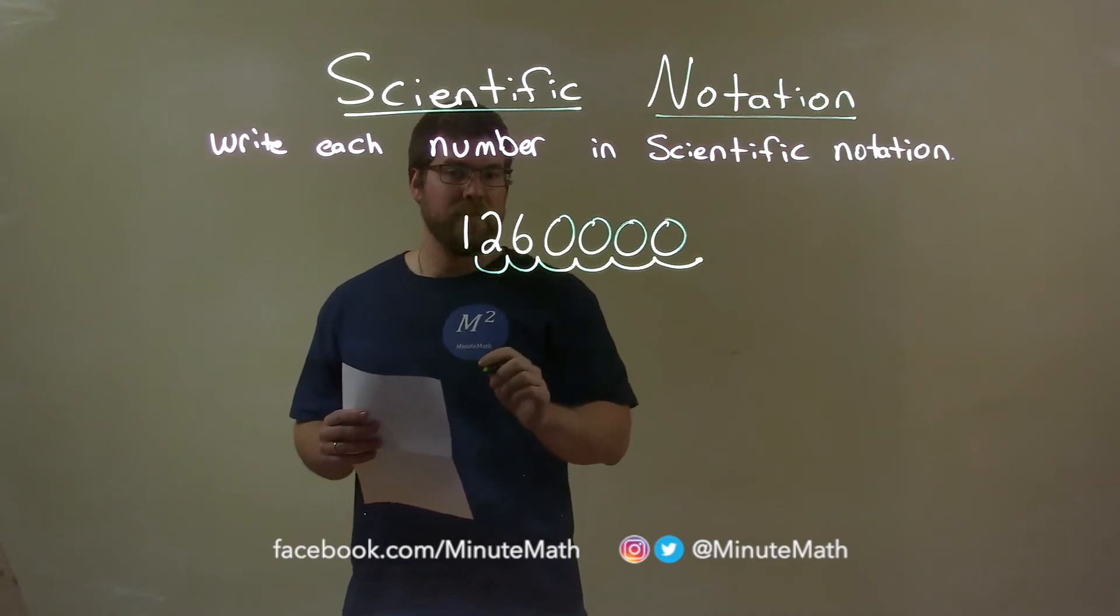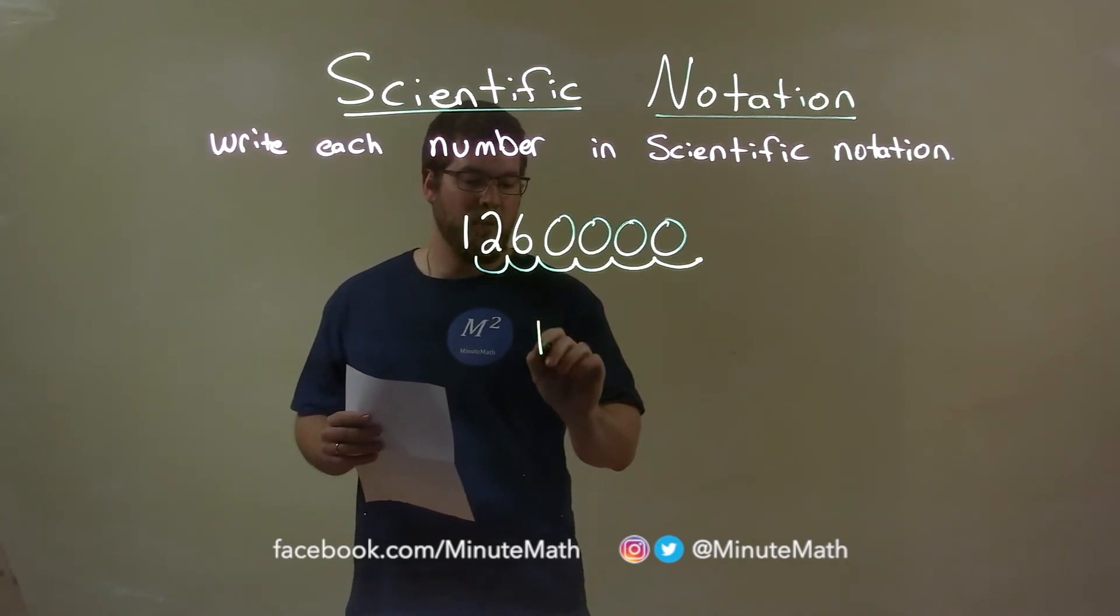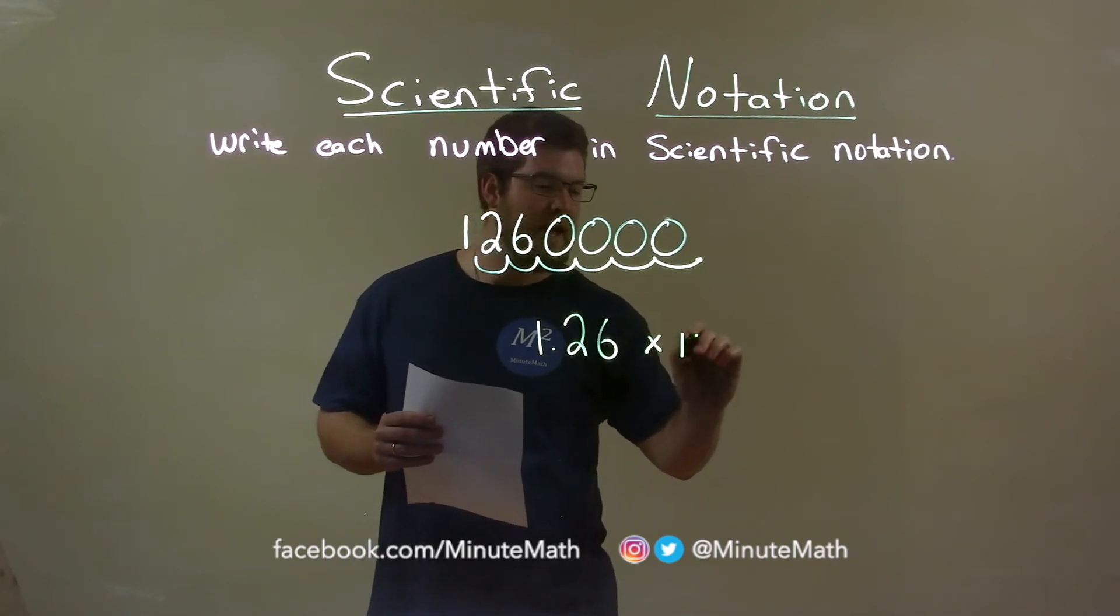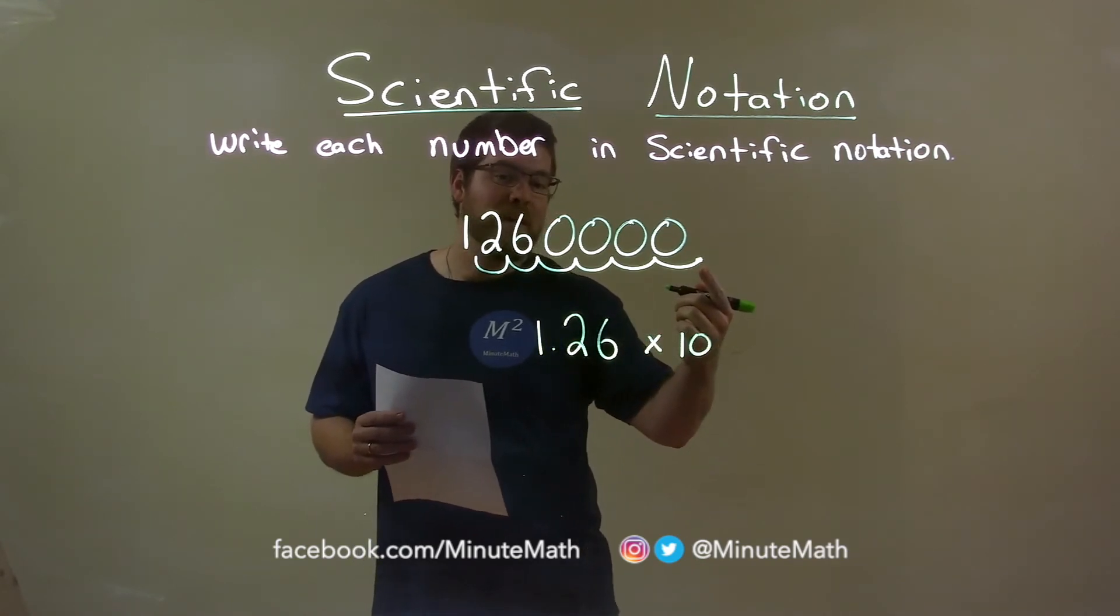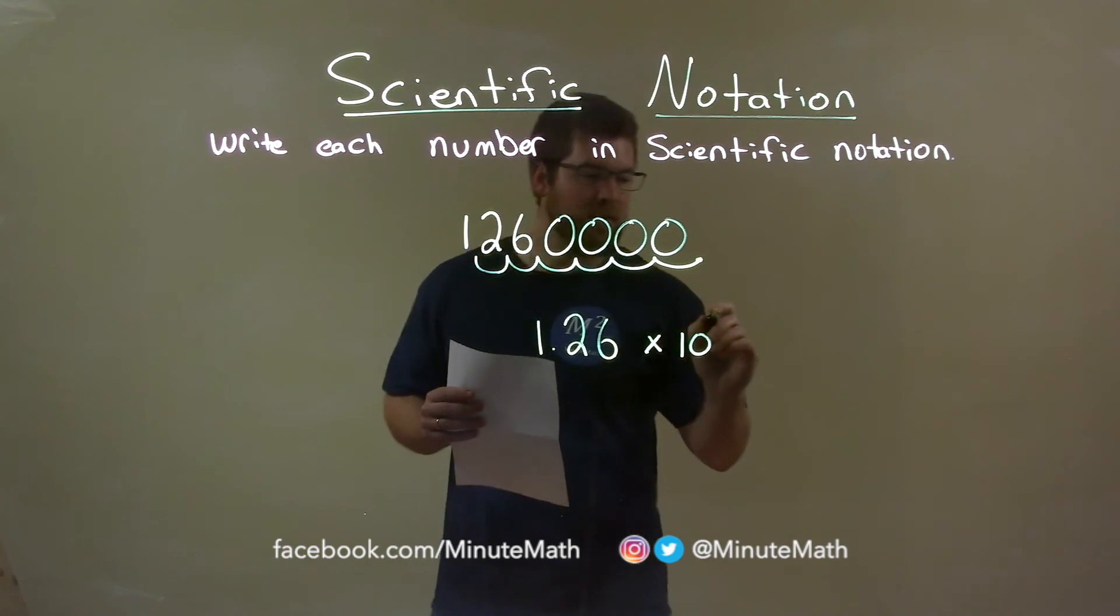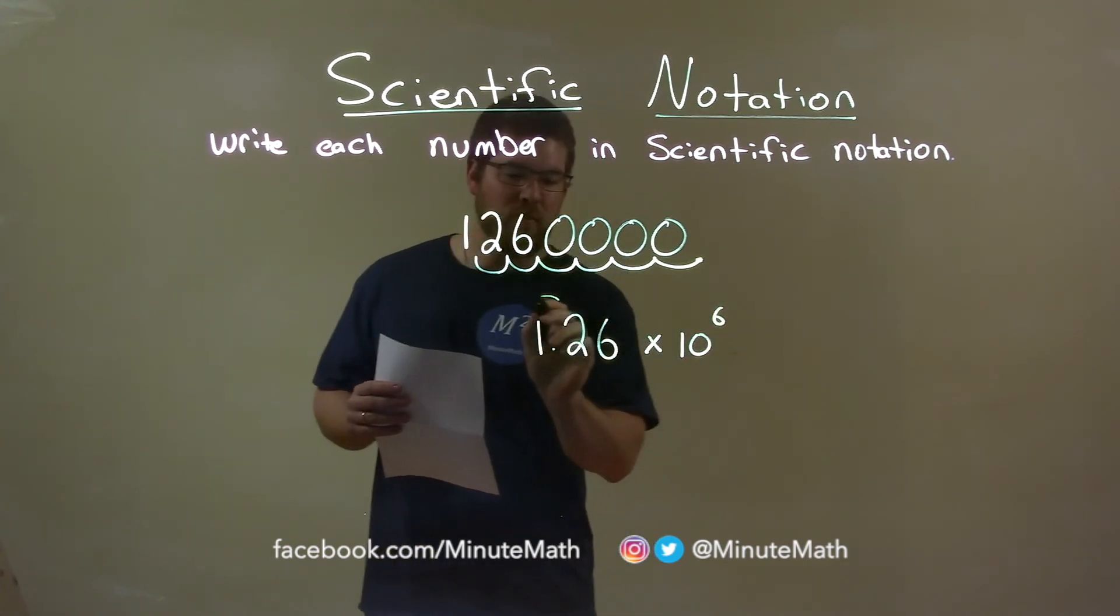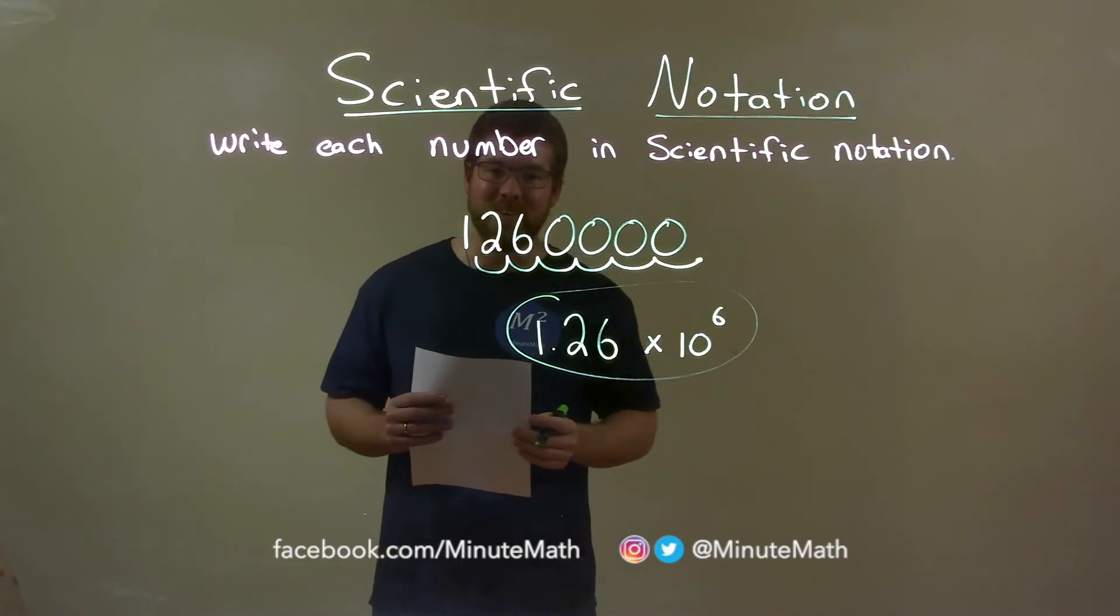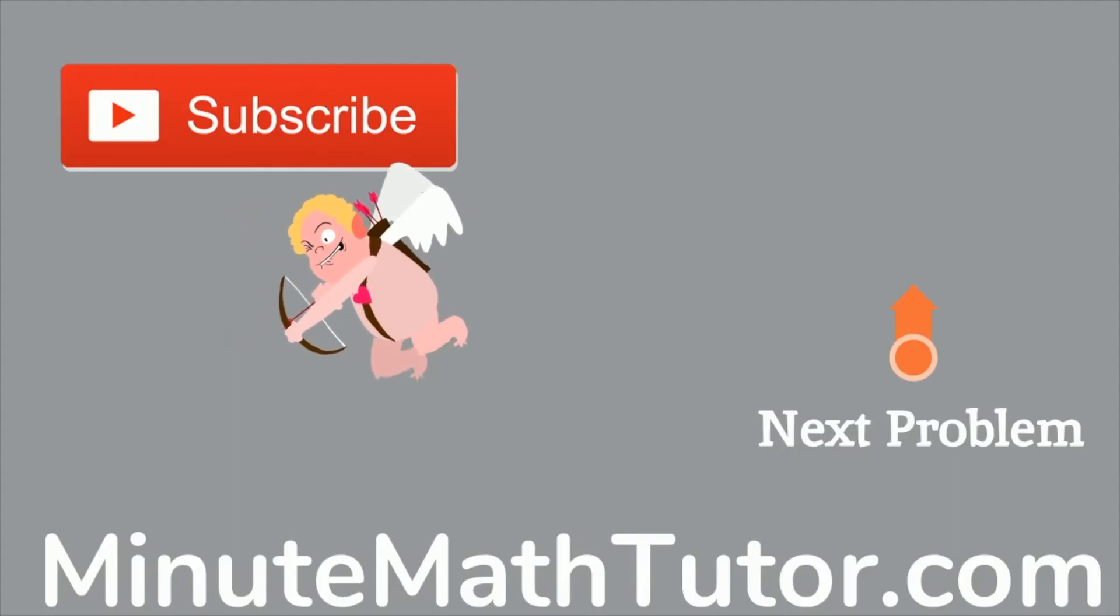So the decimal place is after the one now. So we have 1.26, and we're multiplying that by ten, and we moved the decimal place six spots to the left. So it's ten to the sixth power. So my final answer is 1.26 times ten to the sixth power.